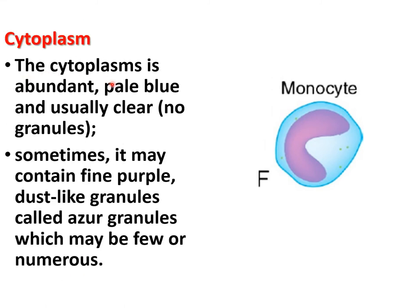The cytoplasm of the monocyte is abundant, pale blue, and usually clear. There are no granules — it is an agranulocyte. Sometimes it may contain fine purple dust-like granules called azure granules, which may be few or numerous.